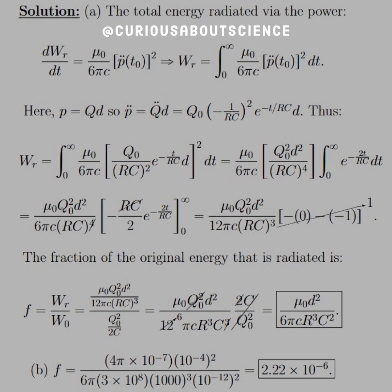What we want is the fraction of the original energy that is radiated. We need the energy radiated over the original energy, and we were given that original energy as Q0 squared over 2C. We divide by a fraction, which is the same as multiplying by the reciprocal. We expand that RC cubed and cancel. The Q0s cancel, the 2 reduces that 12 to a 6, and that factor of C cancels down that C cubed to a C squared. The fraction is mu naught D squared over 6 pi R cubed C squared.